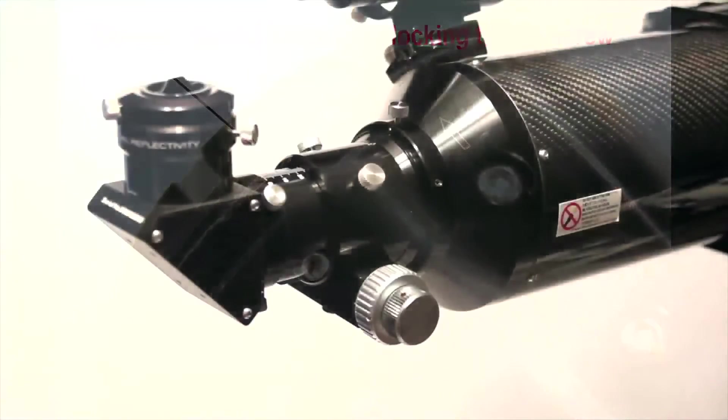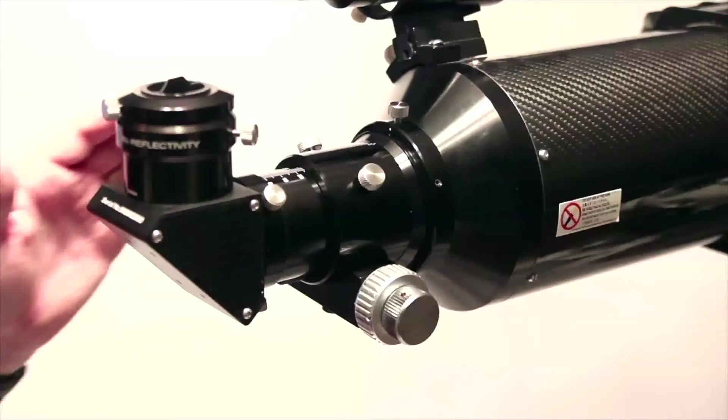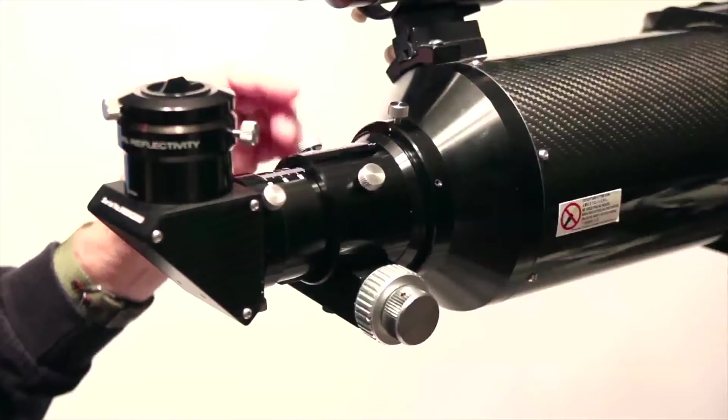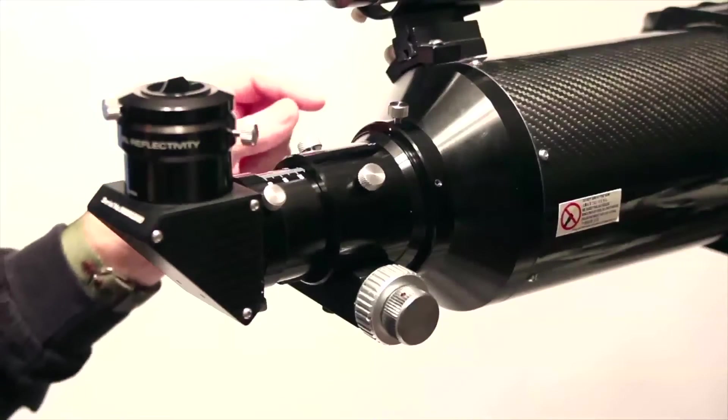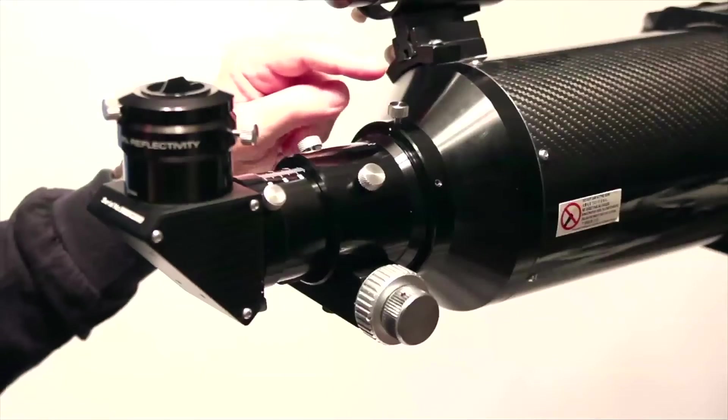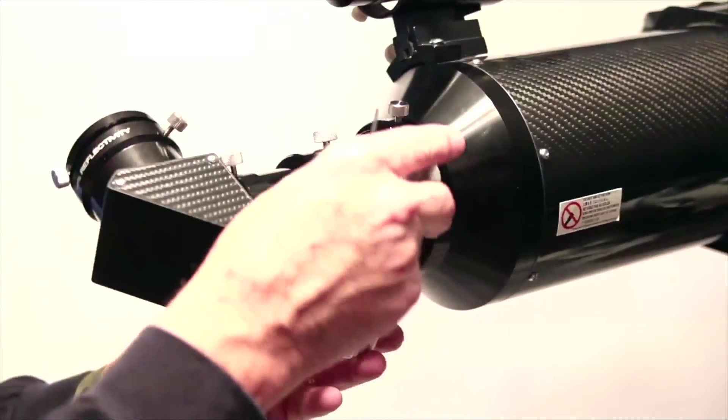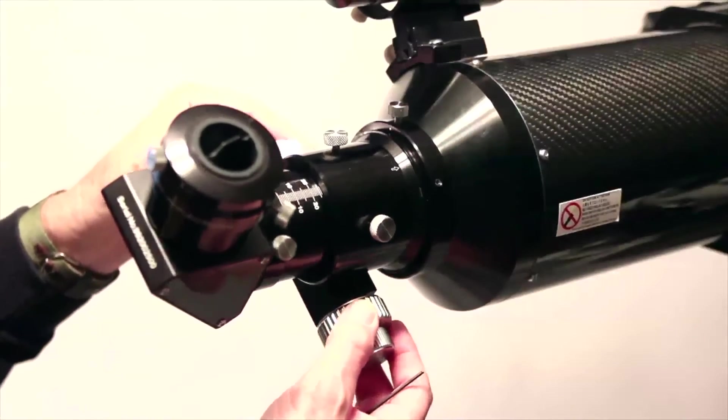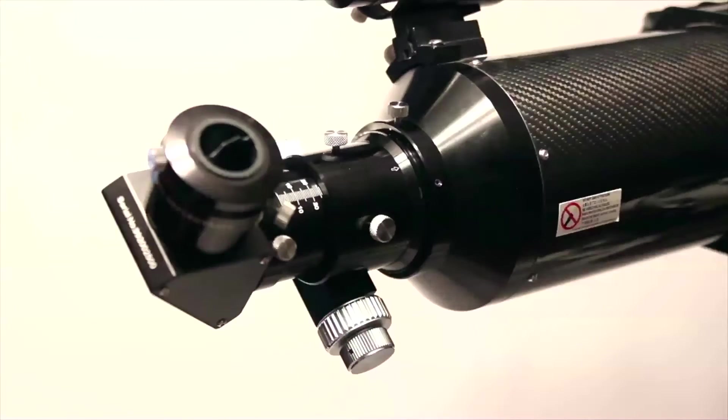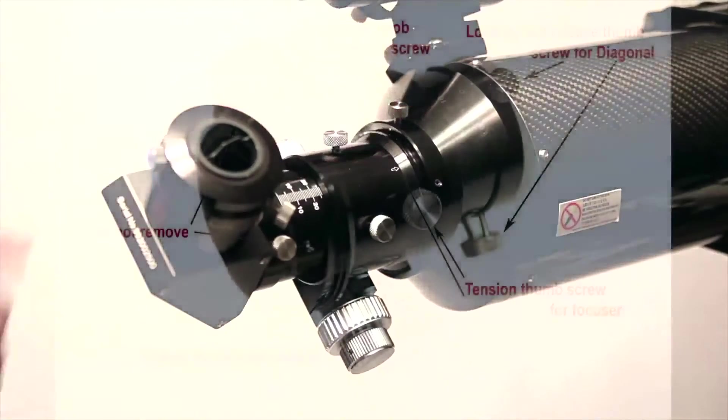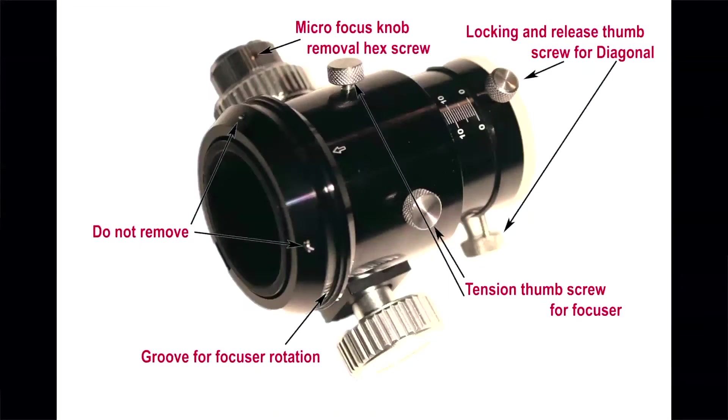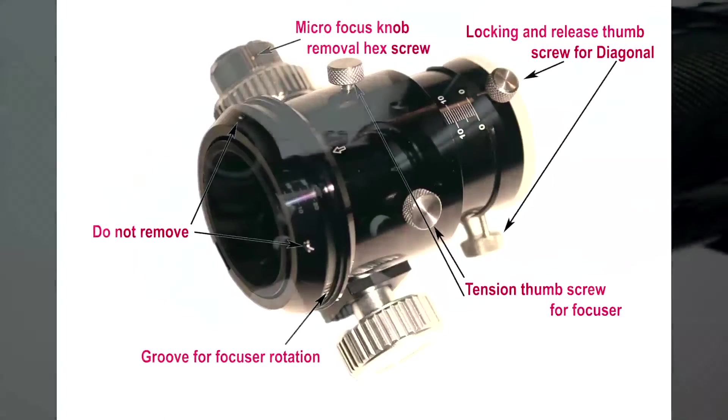That can cause some scratching on the anodizing of the focuser itself. In a second we'll show you the focuser separate and that little groove that goes inside the OTA. Those little plastic headed screws hold the tension. So once this screw is loose, the focuser should rotate smoothly around at any position 360 degrees on the OTA. Once you get it in the position you want to use it in, just use this knob and you don't have to over tighten it. If you're over tightening that knob, these plastic headed screws are not tight enough. You don't want to over tighten them, just snug them up so that it holds the focuser in place.